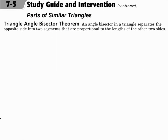The Triangle Angle Bisector Theorem says that an angle bisector in a triangle separates the opposite side into two segments that are proportional to the lengths of the other two sides.